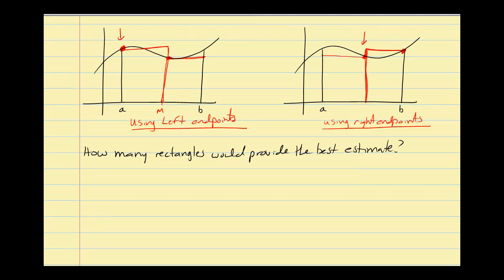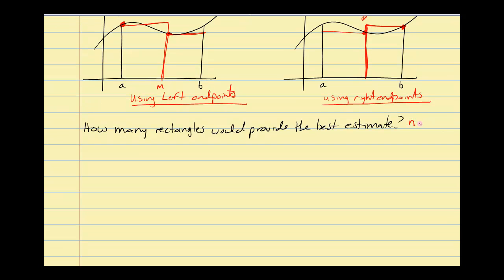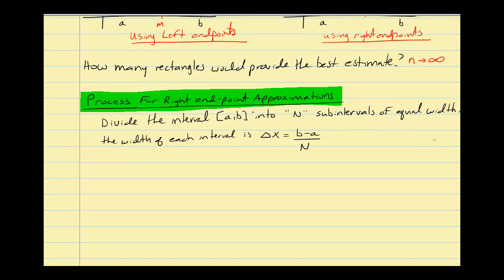How many rectangles would provide the best estimate? One inscribed and one circumscribed did a reasonable job; two rectangles looked even better because over and under estimates partially cancel. An infinite number of rectangles would be best, so we use the concept of a limit and take the number of rectangles n approaching infinity. We'll look at right endpoint, left endpoint, and midpoint approximations.